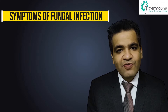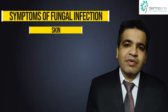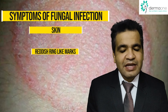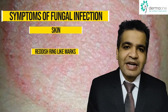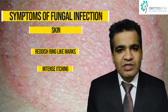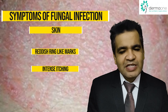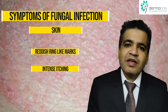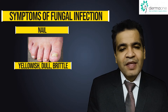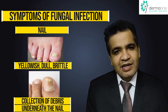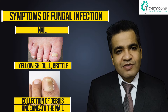The infection can also affect your nails if your hands are wet for a very long period of time or if you scratch an infected area. On the skin, you can see round circular patches which are clear or skin-colored in the center and more red, scaly, or itchy towards the periphery. They may also have some vesicles or small pus-filled lesions on the periphery. On the nails, they appear yellowish, dull, and brittle, with some debris collected underneath the nail surface.